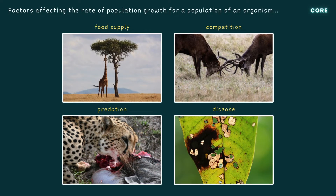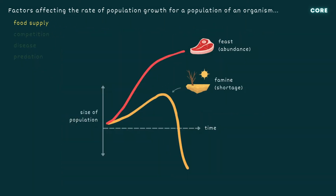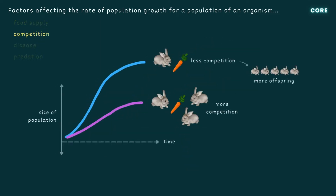Within an ecosystem, population numbers are constantly changing due to factors like food supply, competition, predation and disease. A good food supply increases the chances that organisms will survive and reproduce, while a shortage of food can lead to starvation and death. Competition for resources like food, water, sunlight and territory may restrict a population's growth, while a lack of competition enables a greater proportion of organisms to survive and reproduce.